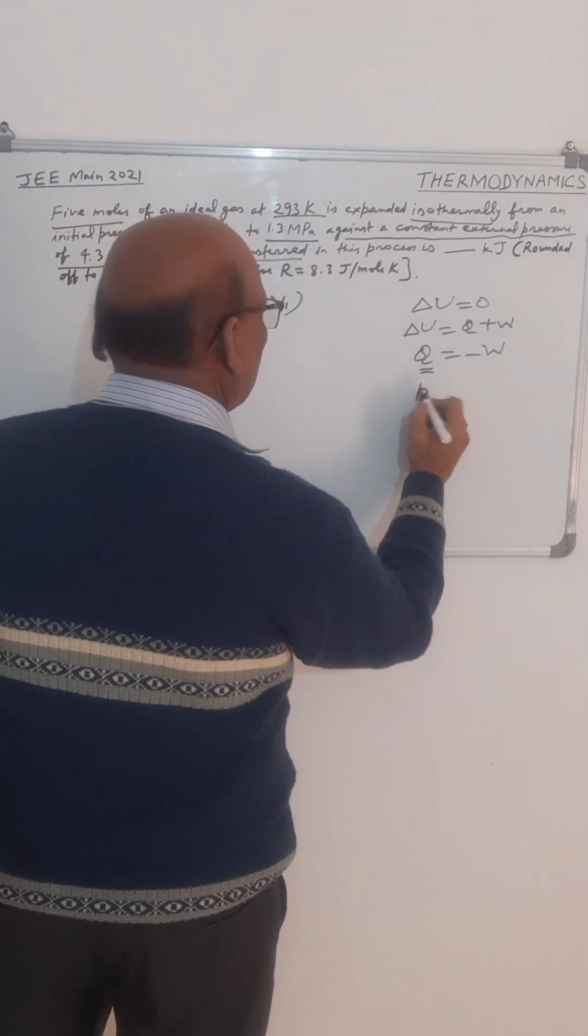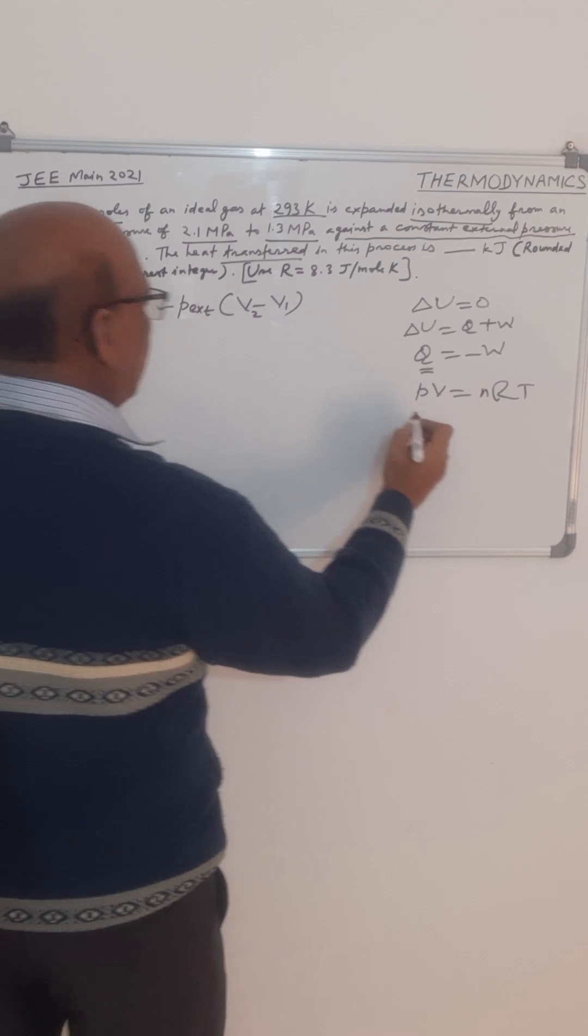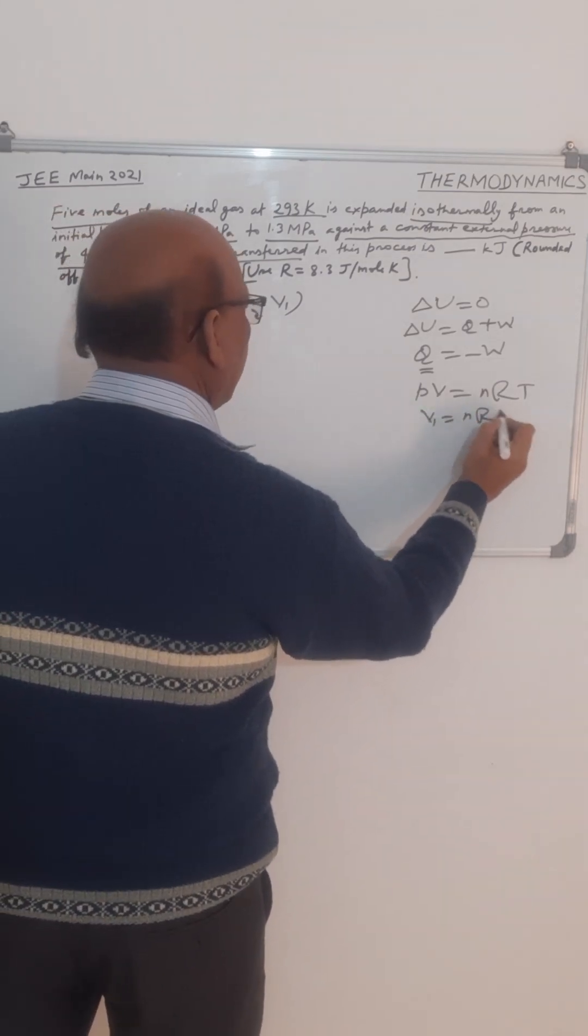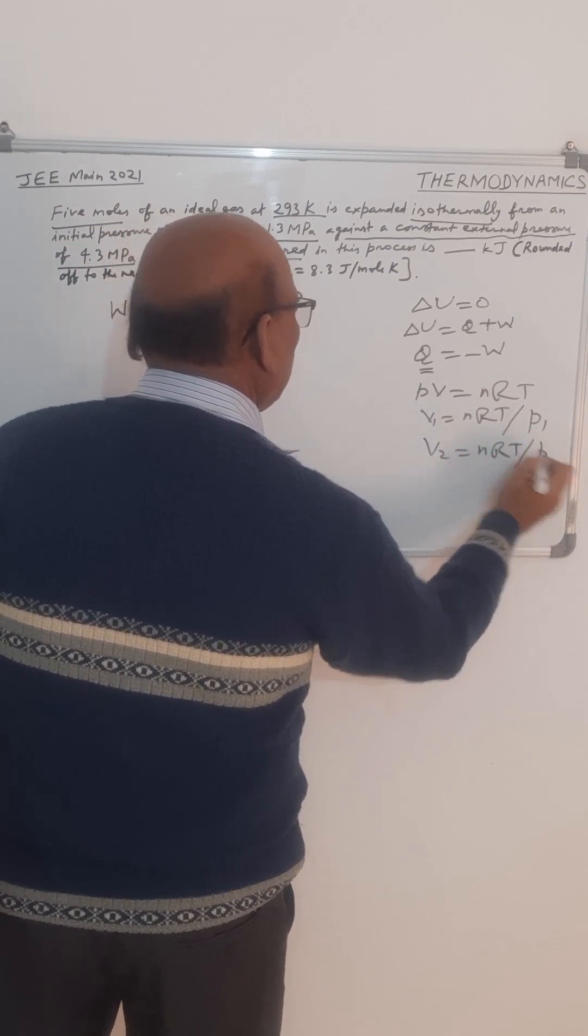So we will apply the ideal gas equation, that is PV equal to NRT. And by this equation, we can find out the value of V1 is equal to NRT upon P1, and V2 equal to NRT upon P2, because temperature remains constant during the process.